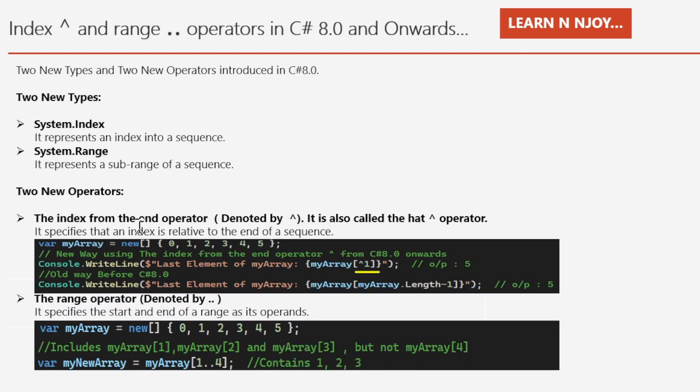The index operator points to an index which is relative to the end of a sequence. It is also called the hat operator, denoted by the caret sign. Let's understand the index operator with an example. Suppose we have an array myArray that has six elements: 0, 1, 2, 3, 4, 5. If you want to print the value of the element placed on the last index, we can simply write myArray[^1] — that's it, and it will fetch the value of the last element.